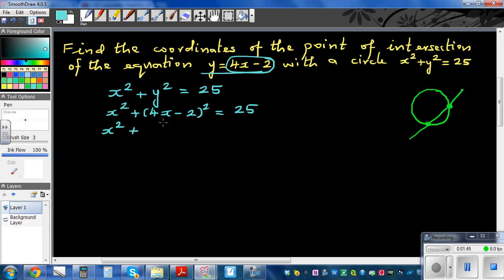So expanding this, I would always write like this not to do mistake. So this is (4x - 2)(4x - 2) = 25. So this becomes x² + 4x times 4x is 16x², then 4x times negative 2 is -8x, negative 2 times 4x is -8x, so that is -16x.